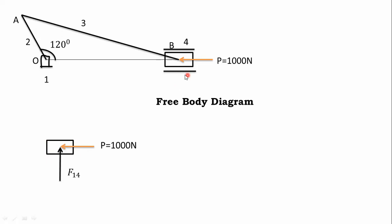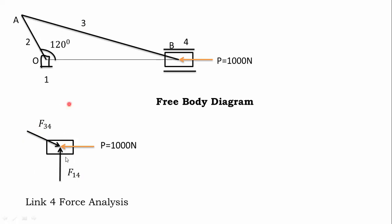The fixed end is link one, and that force always acts perpendicular to the motion, so it acts vertically. The motion of the piston is horizontal, so the force from link one is vertical. We need to mention its direction. The force coming from link one on four is F14. This slider also receives a force from link three, which we mention as F34 — force coming from link three on four.